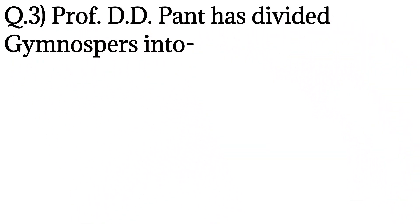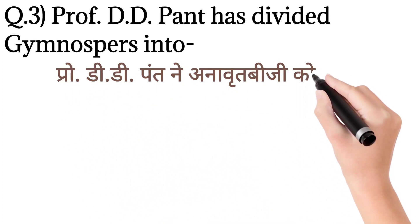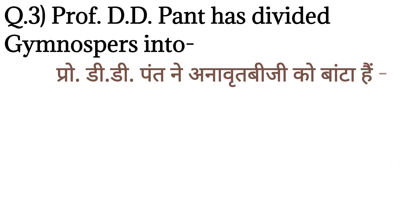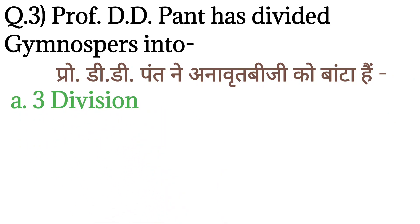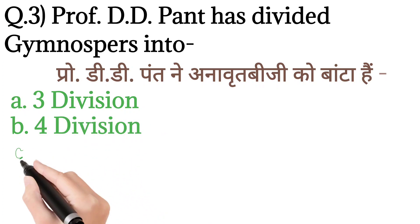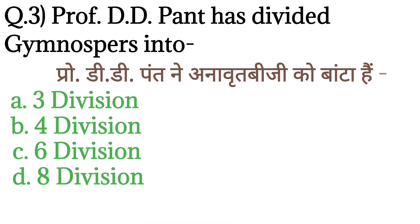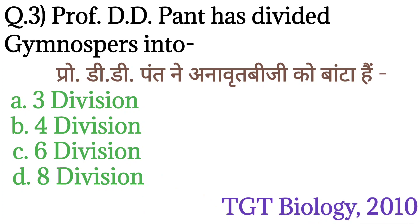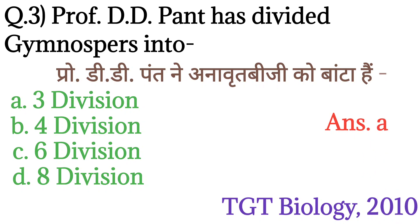Question number 3: Professor DD Pant has divided gymnosperms into — option C: Six divisions, and option D: Eight divisions. This question is from Digital Biology 2010. The answer is option A: Three divisions.